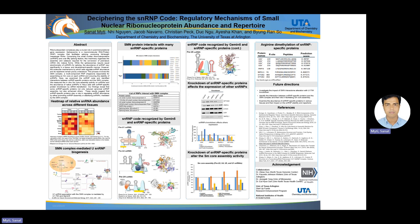For example, SMN binds with U1-70K, U1-A, U2B', U2A', NHP2L1, PRPF4, EFTUD2, and others. Those are the SNARF-specific proteins identified.